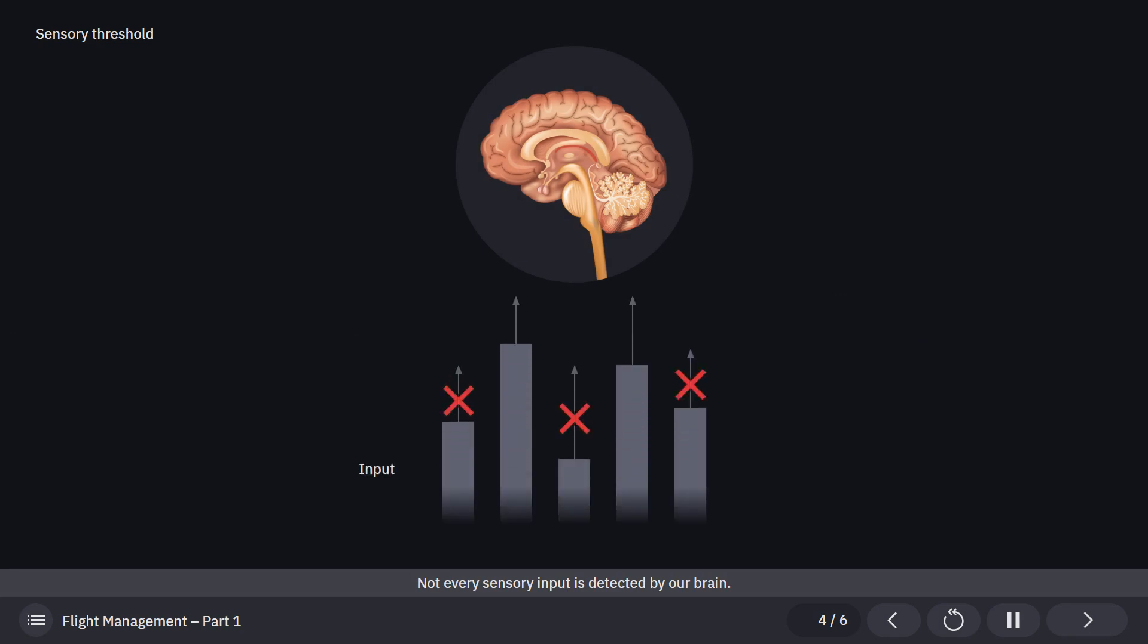Not every sensory input is detected by our brain. To be detected, the input must stimulate the receptor cells with enough strength, which is known as the sensory threshold. For example, the quietest sound a human could hear has a noise level of 0 decibels.